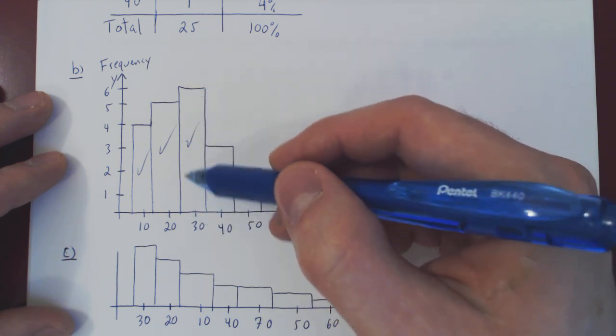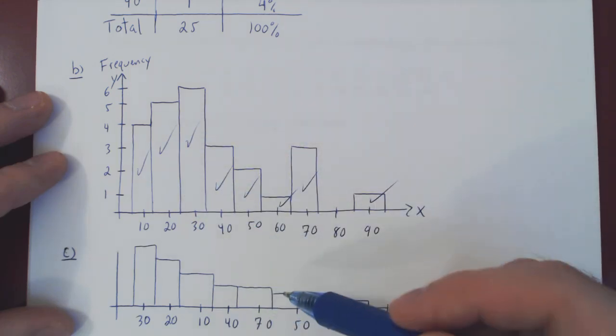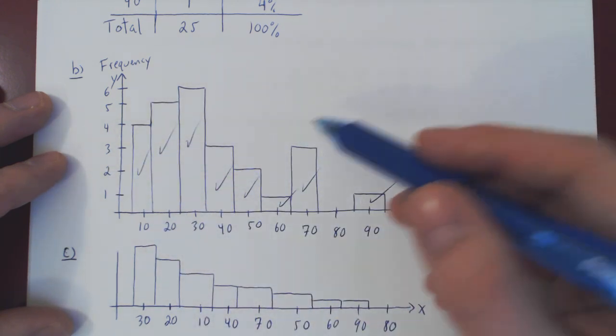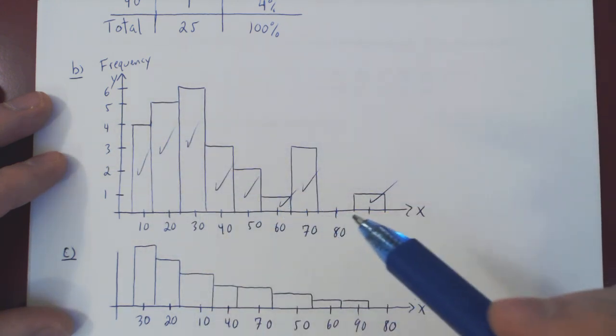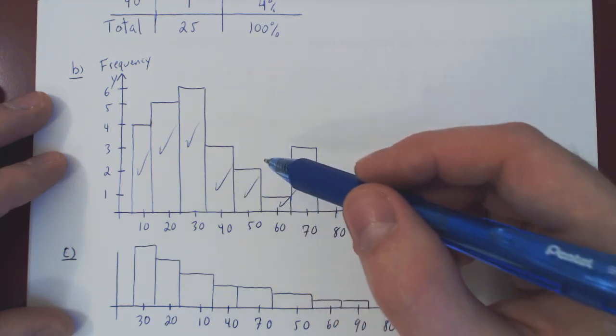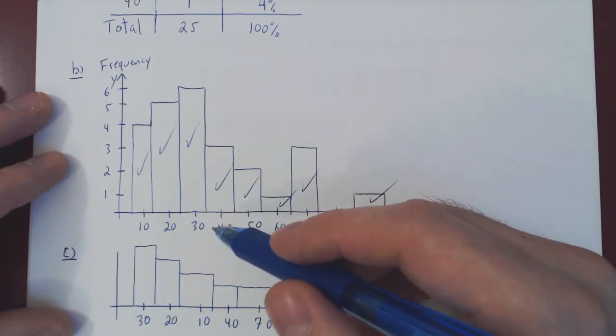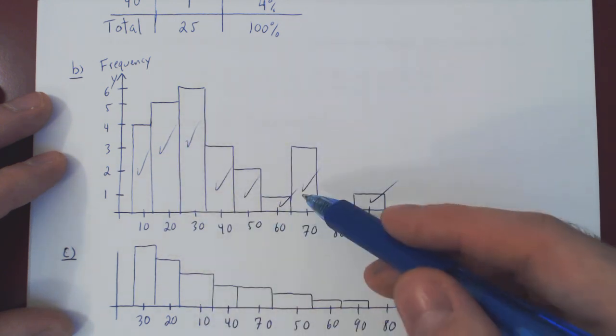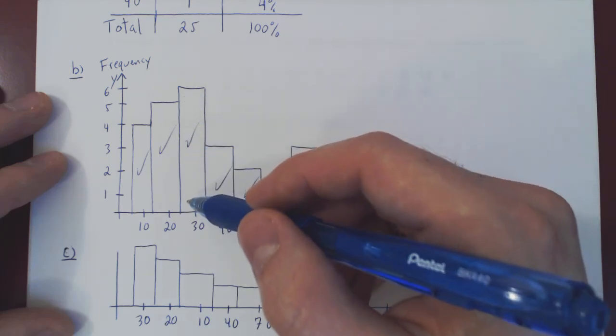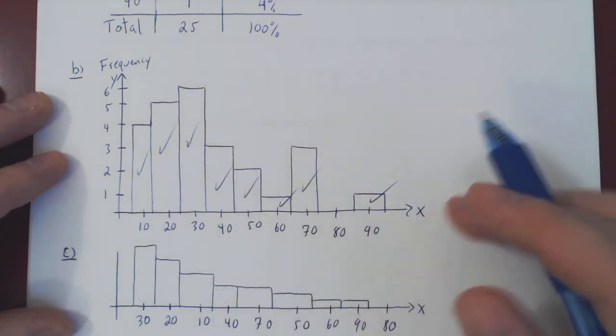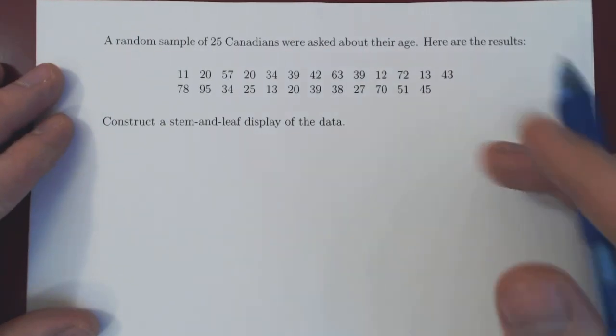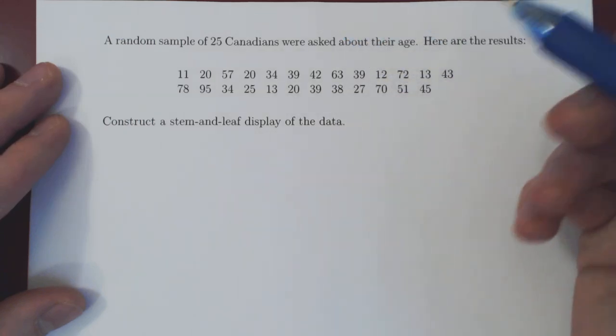This information here is lost. The question now is, well, can we construct a bar graph where none of the raw information is lost? And the answer is yes. That is exactly what a stem and leaf display is. You'll see it is exactly a bar graph, except that in our frequency bars will also be contained the raw data.